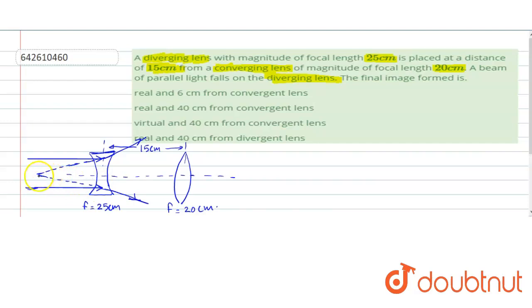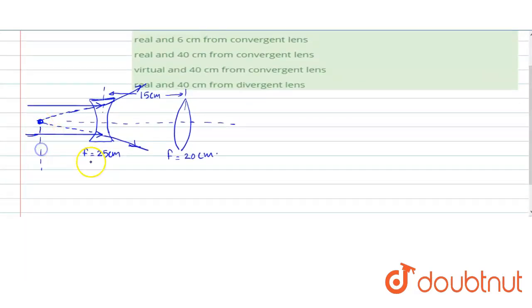And the focus will be at 25 cm from the lens. So that means after the refraction from the diverging lens or the lens one, a virtual image will be formed at 25 cm from lens one.